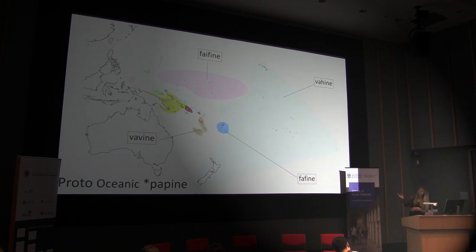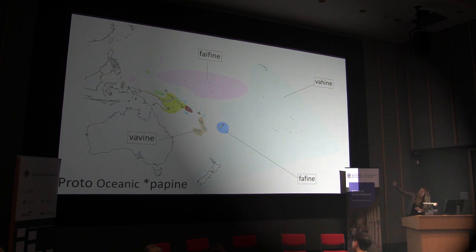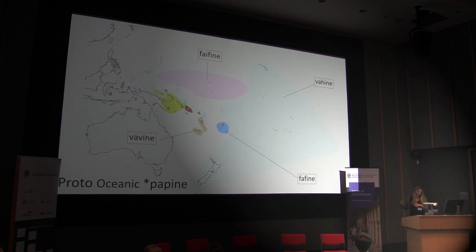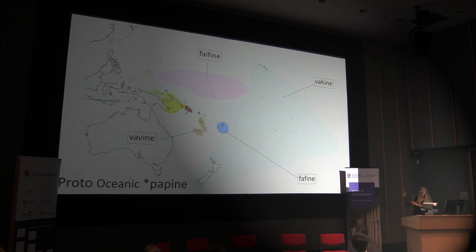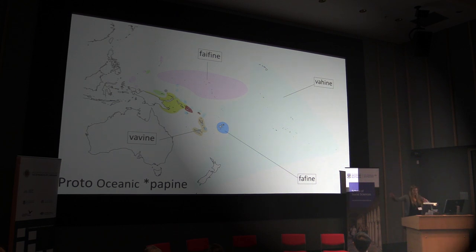Changes from the proto-language that are shared by certain languages allow us to group those languages more closely together. For the word 'woman,' linguists have reconstructed 'papine' for Proto-Oceanic. If you look at the common words for woman throughout the Pacific, you can see strong similarities. We have 'vavine' in the languages of North and South Vanuatu, 'faifine' in Micronesia, 'fafine' in Western Polynesia, and 'vahine' in East Polynesia. These differences in sound development allow us to separate languages into groups — some are sister languages, others are more like distant cousins, even though they're all related.